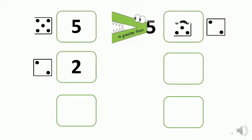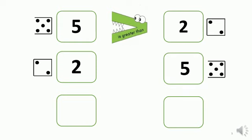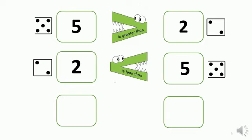Smart alligator! This time I will write number two on the left side and number five on the right side. Which number is bigger, kids? Again, it's five! Let's see what the alligator will do. It's searching, searching for the bigger... oh! Again it knows that five is the bigger. It stopped and its mouth is open towards the five, ready to eat it.